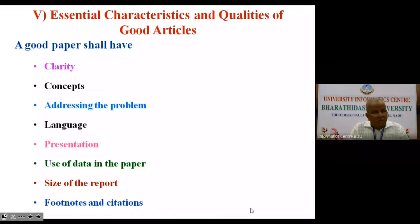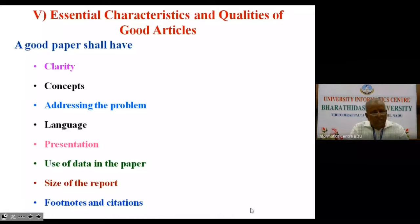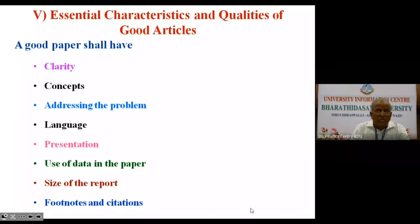Regarding the size of the report — this is very important. Each and every journal prescribes a number of pages. Some journals expect 10 pages, some expect 20 pages, and some even expect 40 pages. Accordingly, you have to cut your length, and then only the publisher will accept your paper. The last quality is footnotes and citations — this is very important. Wherever required, you have to give a footnote. Whenever you are borrowing ideas or using the ideas of others, you should give the necessary citation in the required style. These are the eight qualities that all researchers should note.